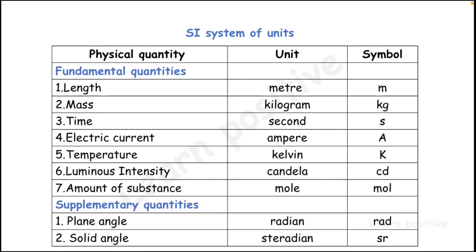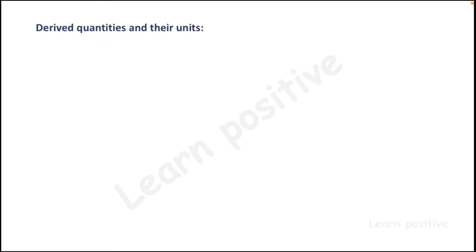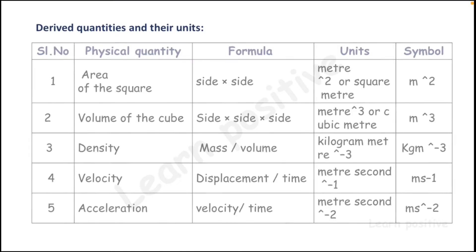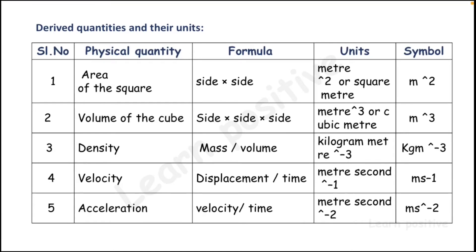Now we are going to see about derived units — we will discuss 10 derived units. The physical quantity, formula, unit, and symbol are shown. The first one is area of a square: formula is side × side, unit is square metre, symbol m². The second one is volume of a cube: formula is side × side × side, unit is cubic metre, symbol m³.